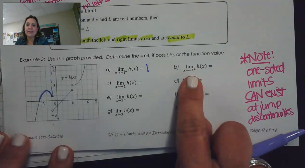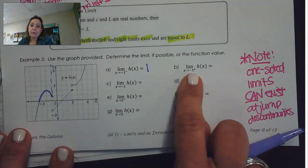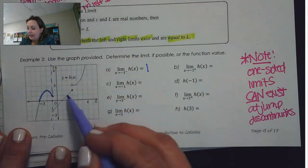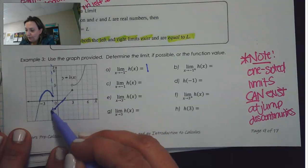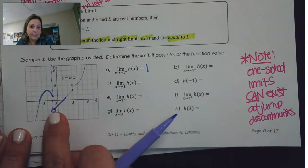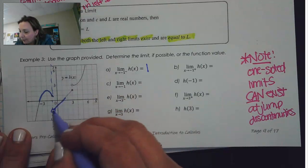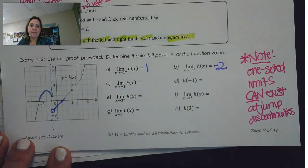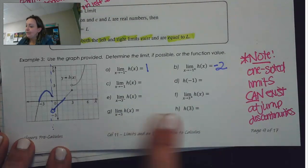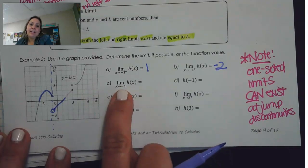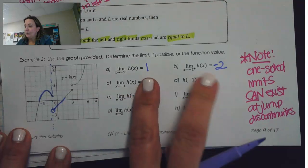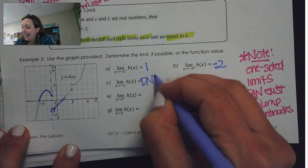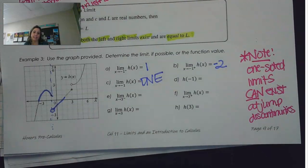In letter B, this one wants us to approach negative one from the right. Here's where x is negative one. From the right, there is a little hole here, but from the right it's approaching this value at negative 2. Therefore, what is the limit of H of x as x approaches negative 1? Did these match? They didn't — so the limit as x approaches negative 1 does not exist.